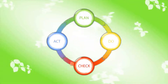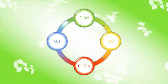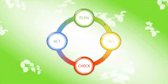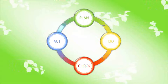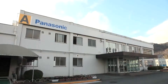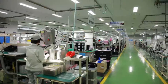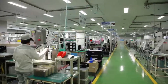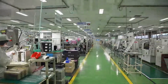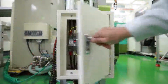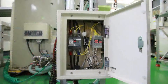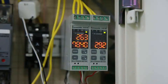Implementing the PDCA cycle will benefit your company on its productivity and profit. We want to introduce a model company who is practicing the PDCA cycle: Panasonic Device Sanks Tatsuno Corporation Limited. They have many eco power meters installed in their factory, and the whole company is working on saving energy.